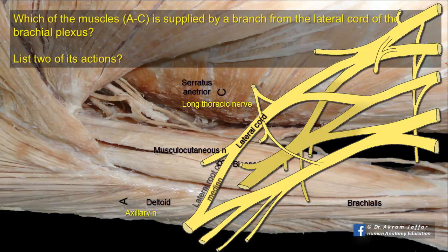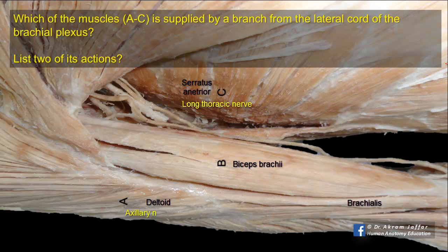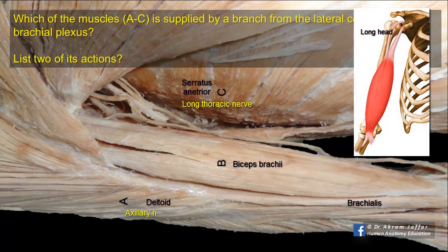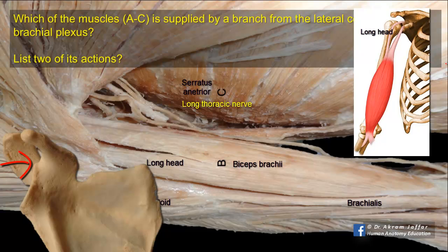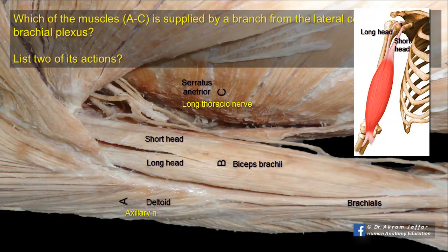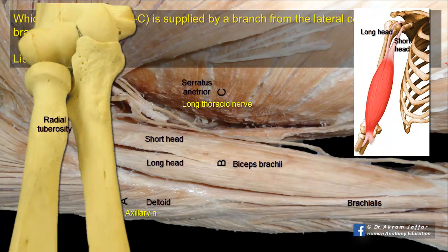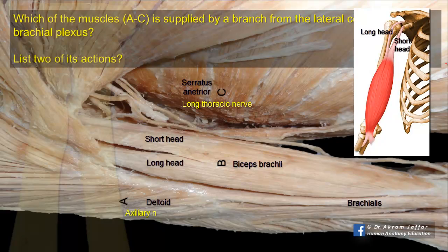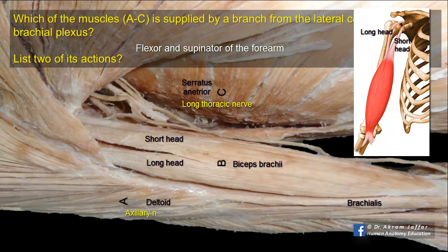The other terminal branch is the lateral root of the median nerve. Regarding the action of biceps: biceps has two heads of origin. The long head, which is lateral, arises from the supraglenoid tubercle of the scapula within the capsule of the shoulder joint. The short head arises from the tip of the coracoid process of the scapula in common with coracobrachialis muscle. Distally, the tendon crosses in front of the elbow joint to be inserted mainly into the radial tuberosity. The muscle, crossing the elbow and being attached to the radius, is a powerful flexor and supinator of the forearm. Its long head, which crosses the shoulder joint, helps in flexion at the shoulder.